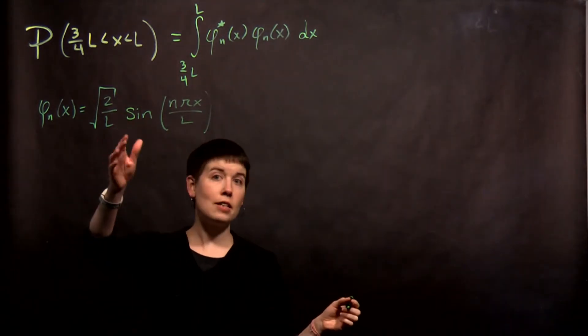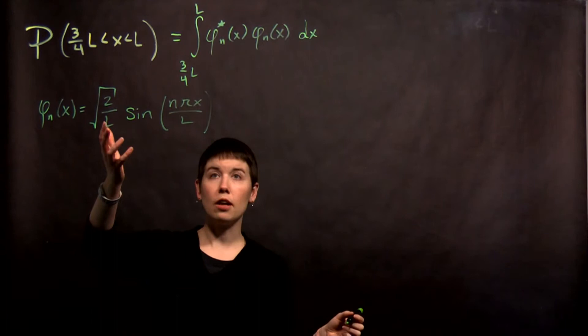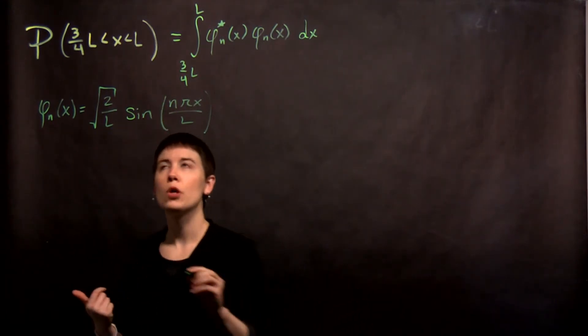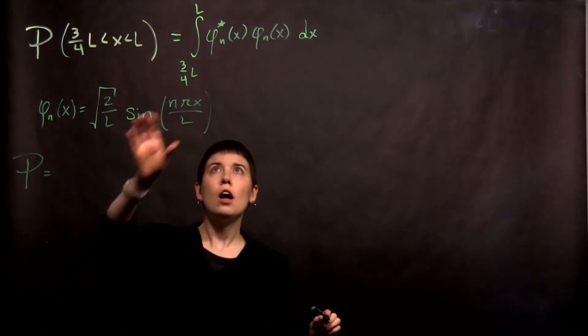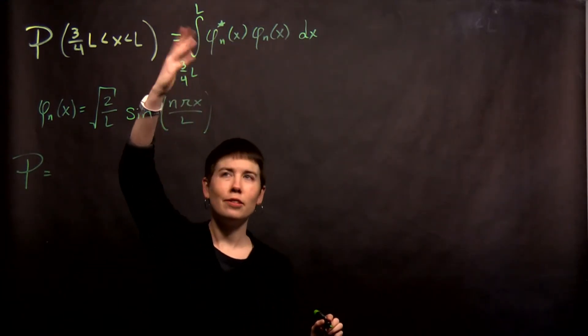Now notice that this isn't actually imaginary. It's not complex. It could be, but it isn't. So then when I go to calculate this probability, this is just going to be the function squared. Nice and easy.